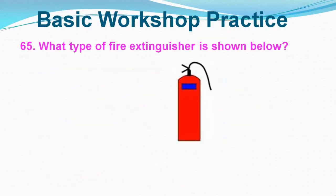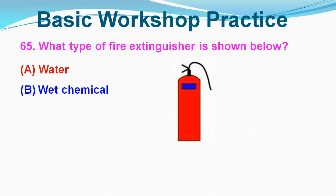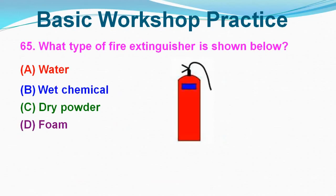Question No. 65: What type of fire extinguisher is shown below? Option A: Water, Option B: Wet Chemical, Option C: Dry Powder, Option D: Foam. Correct answer is Option C, Dry Powder.